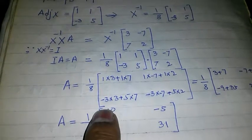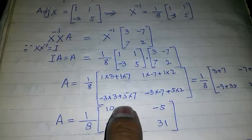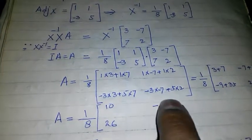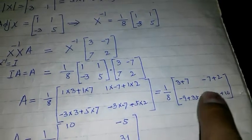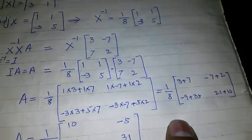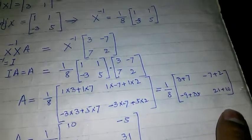For the second row: -3 times 3 plus 5 times 7, and -3 times (-7) plus 5 times 2. This gives us 1/8 times the matrix [3+7, -7+2; -9+35, 21+10], which equals 1/8 times [10, -5; 26, 31].